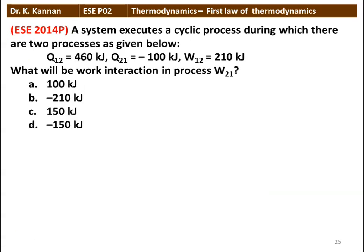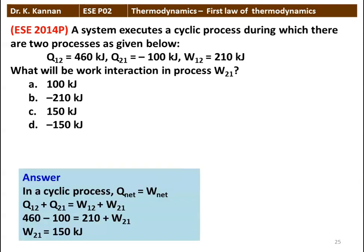The next question: a system executes a cyclic process during which there are two processes — Q12 = 460 kilojoules, Q21 = minus 100 kilojoules, W12 = 210 kilojoules. What will be the work interaction W21? Options: 100 kilojoules, minus 210 kilojoules, 150 kilojoules and minus 150 kilojoules. In a cyclic process, net heat transfer equals net work transfer: Q12 + Q21 = W12 + W21. Substituting: 460 − 100 = 210 + W21, so W21 = 150 kilojoules.